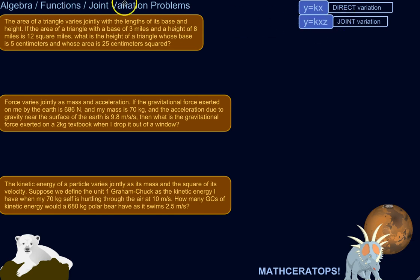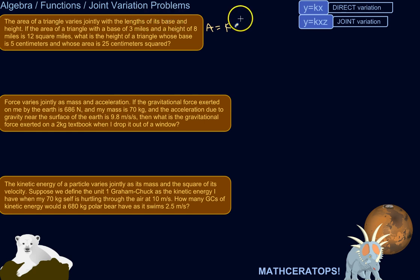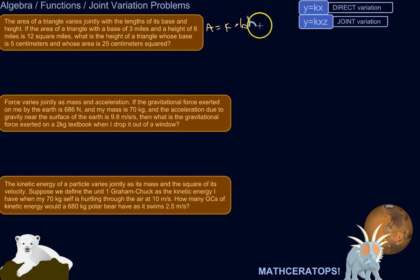Let's look at some concrete examples. The area of a triangle varies jointly with the lengths of its base and height. So we could say that A is equal to some constant times base and height. In other words, A is in a direct variation, or it varies directly as two different variables — base and height.